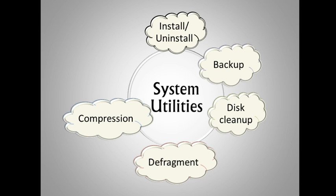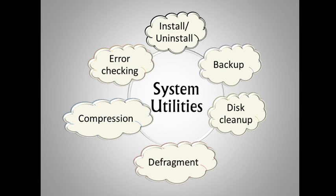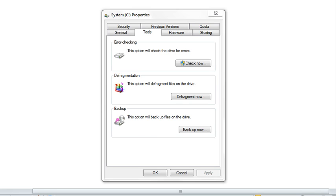Compression makes the storage space more. There is also an error checking utility if you find a problem with your hard drive or anything about the running of your system. These utilities are found in the properties of your C drive.